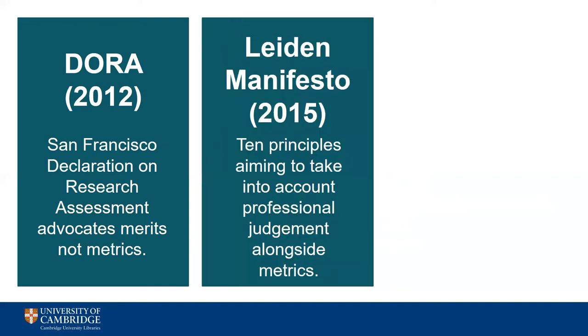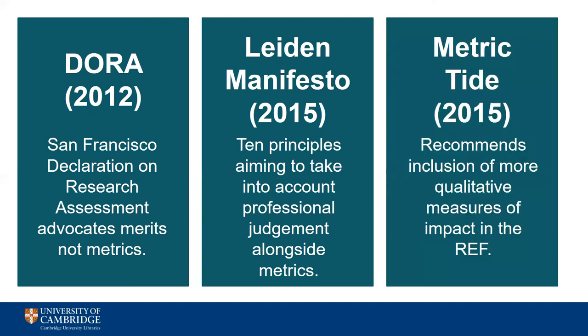The Leiden Manifesto was next in 2015 and builds on the basic principles of DORA. The key element of this document is that it calls for professional judgment to be used alongside metric measures to assess research outputs, rather than just relying on the metrics alone. The final document is the UK-based Metric Tide Report, which also came out in 2015. This was commissioned by the UK Forum for Responsible Metrics to look at the reliance on metrics in assessment exercises like the Research Excellence Framework, or the REF.